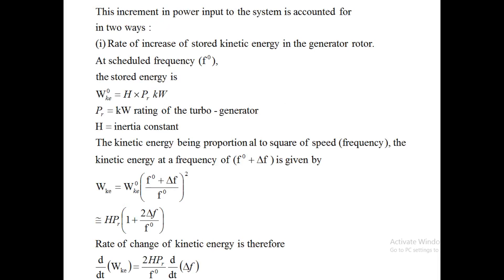This increment in power input to the system is accounted for in two ways. One is the rate of increase of stored kinetic energy in the generator rotor. At a scheduled frequency f_0, the stored kinetic energy can be represented as H * P_r, where P_r is the kilowatt rating of the turbo-generator and H is the inertia constant — kinetic energy stored divided by the rating of the machine. So kinetic energy stored equals H * P_r.